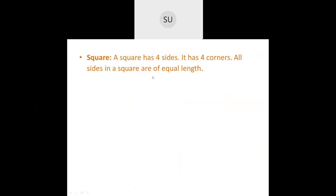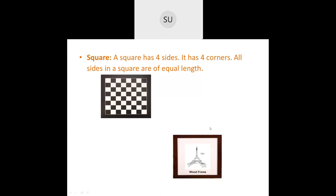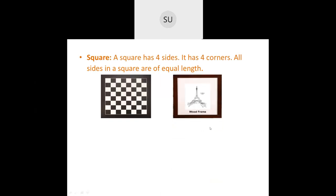A square has four sides and all sides are equal in length. A chessboard is an example of a square. It also has four vertices, and the corners are called vertices. A picture frame is also an example of a square.